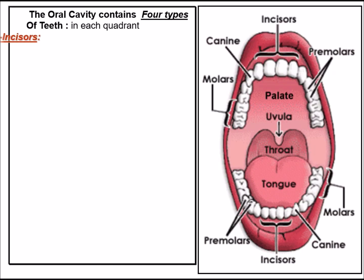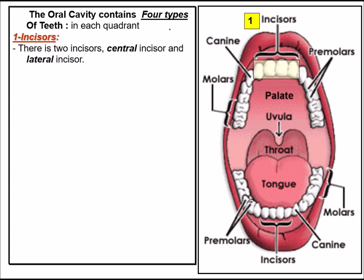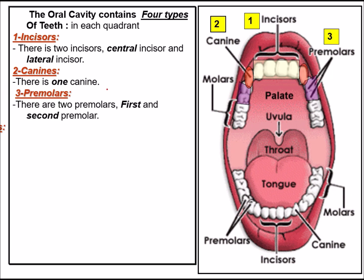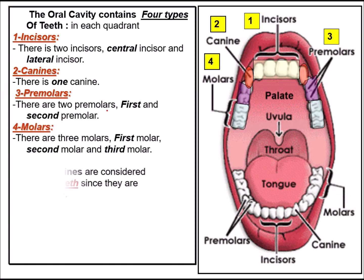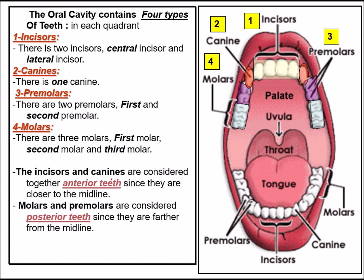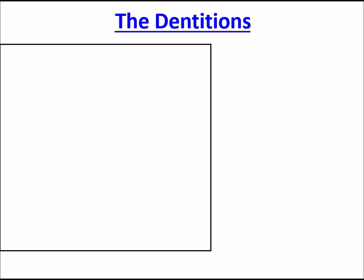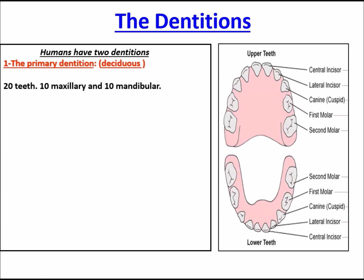The oral cavity contains four types of teeth: two incisors, one canine, two premolars, and three molars. Incisors and canines are considered anterior teeth, while molars and premolars are known as posterior teeth.